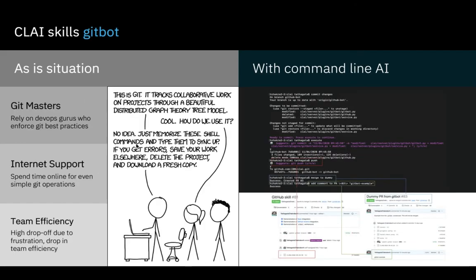To conclude our tour of selected skills, we will look at GitBot, which enables an interface to Git repositories from the command line using natural language. This alleviates the need for the user to remember complicated Git commands and their sequencing, and reduces the chance that the end user will need to seek support when interacting with Git repositories.